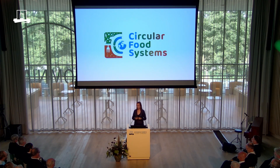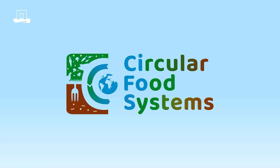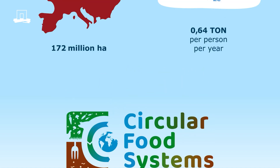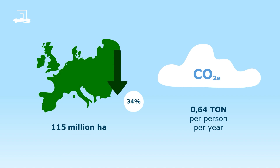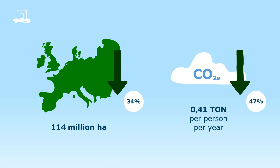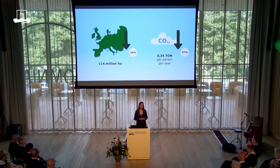To assess the potential towards a circular food system, we developed the circular food system model — the CFOS model — and our very first results are very promising. If we redesign the European food system towards a circular one, we can reduce agricultural land use by around a third and reduce greenhouse gas emissions by around 50%, to around 340 kilos of CO2 equivalents per person per year — far below the boundary of 500 kilos set by Willett et al.